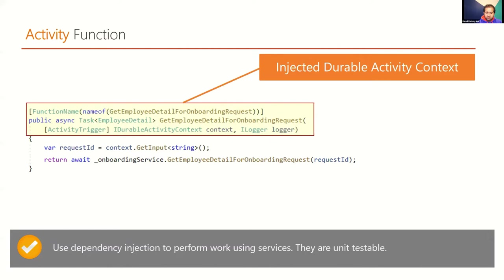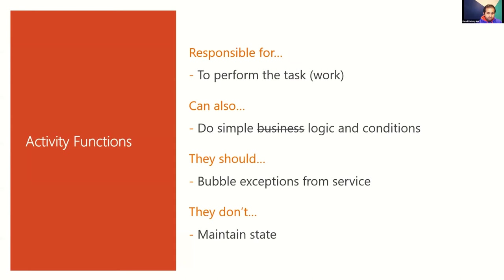Dependency injection ensures your code is unit testable. Activity functions can be tested, but they're not meant to run all the business logic — let the business logic be written at the domain level, handled by domain classes. Activity functions are responsible to perform the work; they can do simple logic but are never meant to handle business rules. They can transform data back and forth to services and let the service handle business logic conditions.